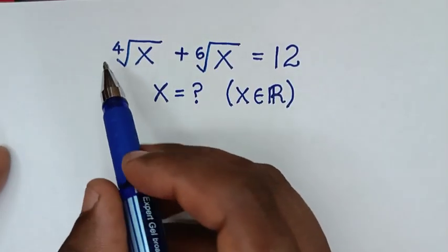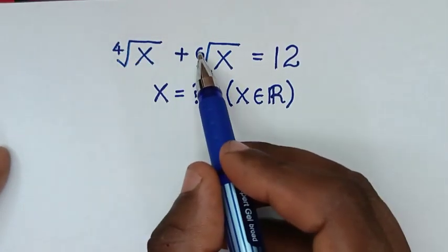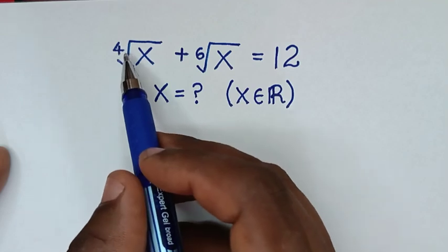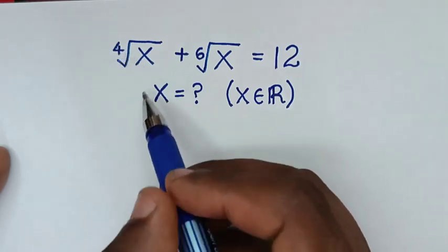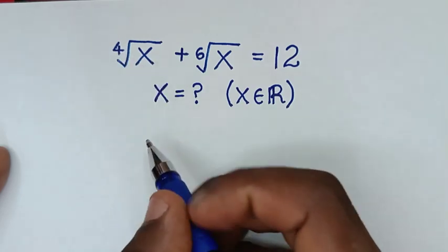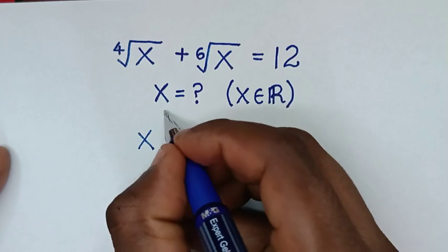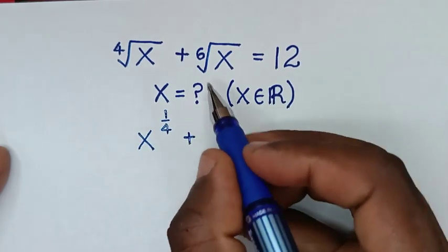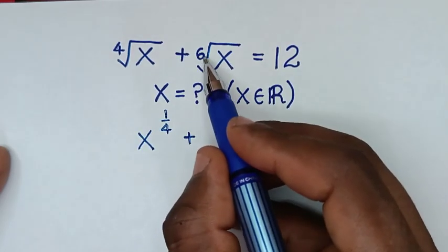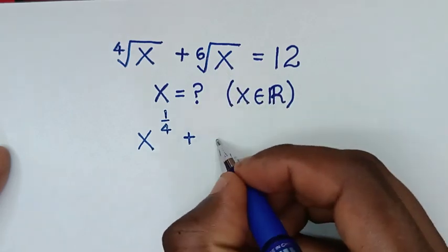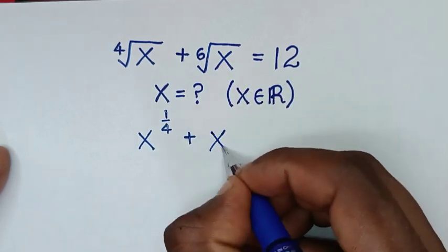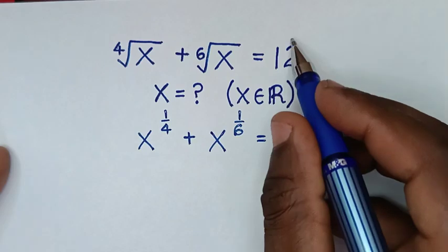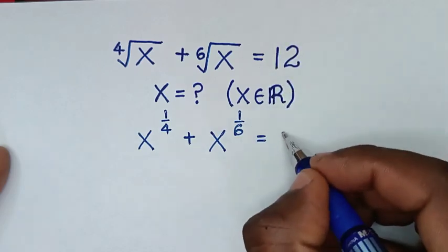In the first step, we'll change these roots into exponents. The 4th root is the same as the power of 1 over 4, so it will be x to the power of 1 over 4, then plus the 6th root is the same as the power of 1 over 6, so it will be plus x to the power of 1 over 6, is equal to 12.